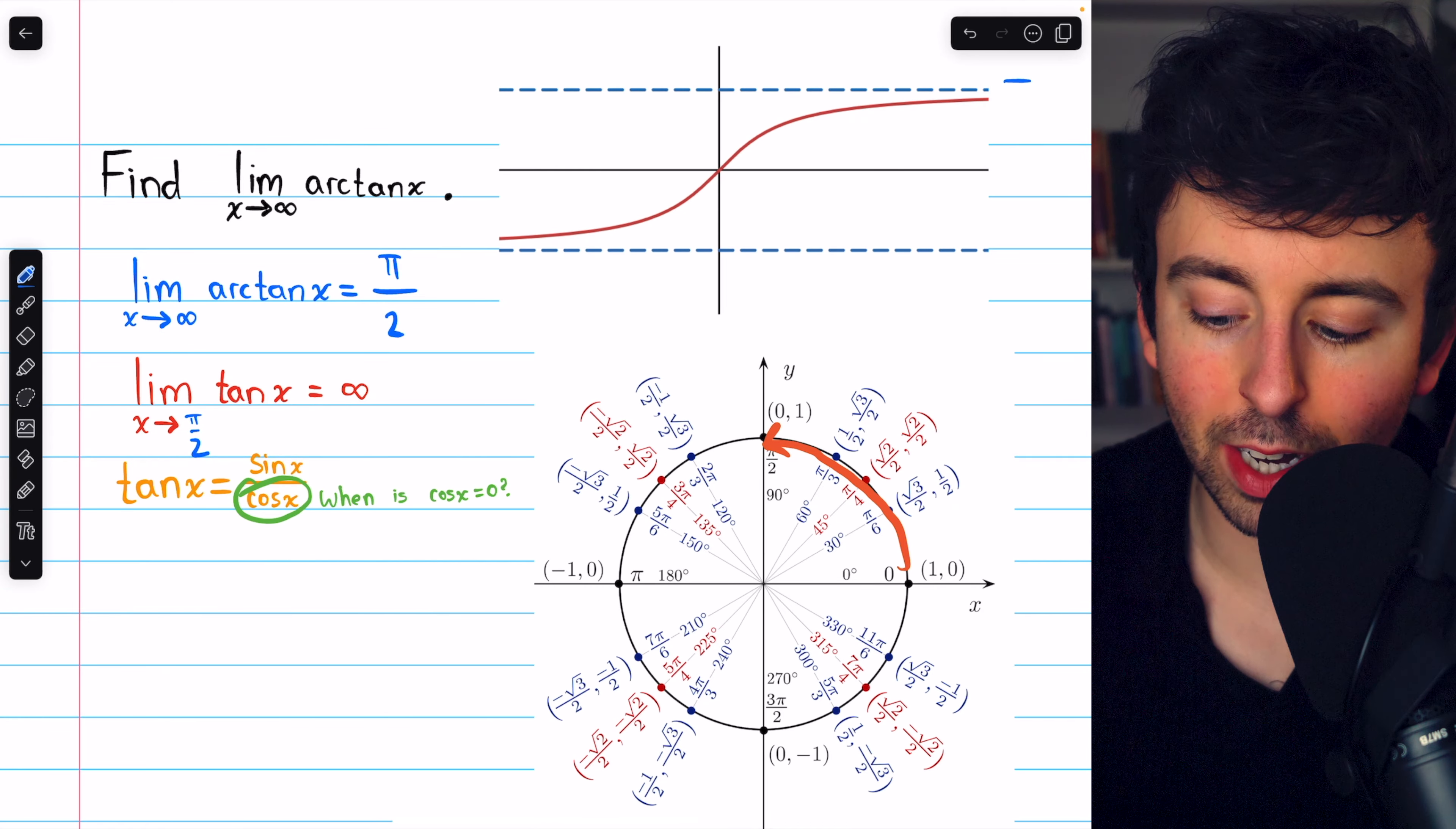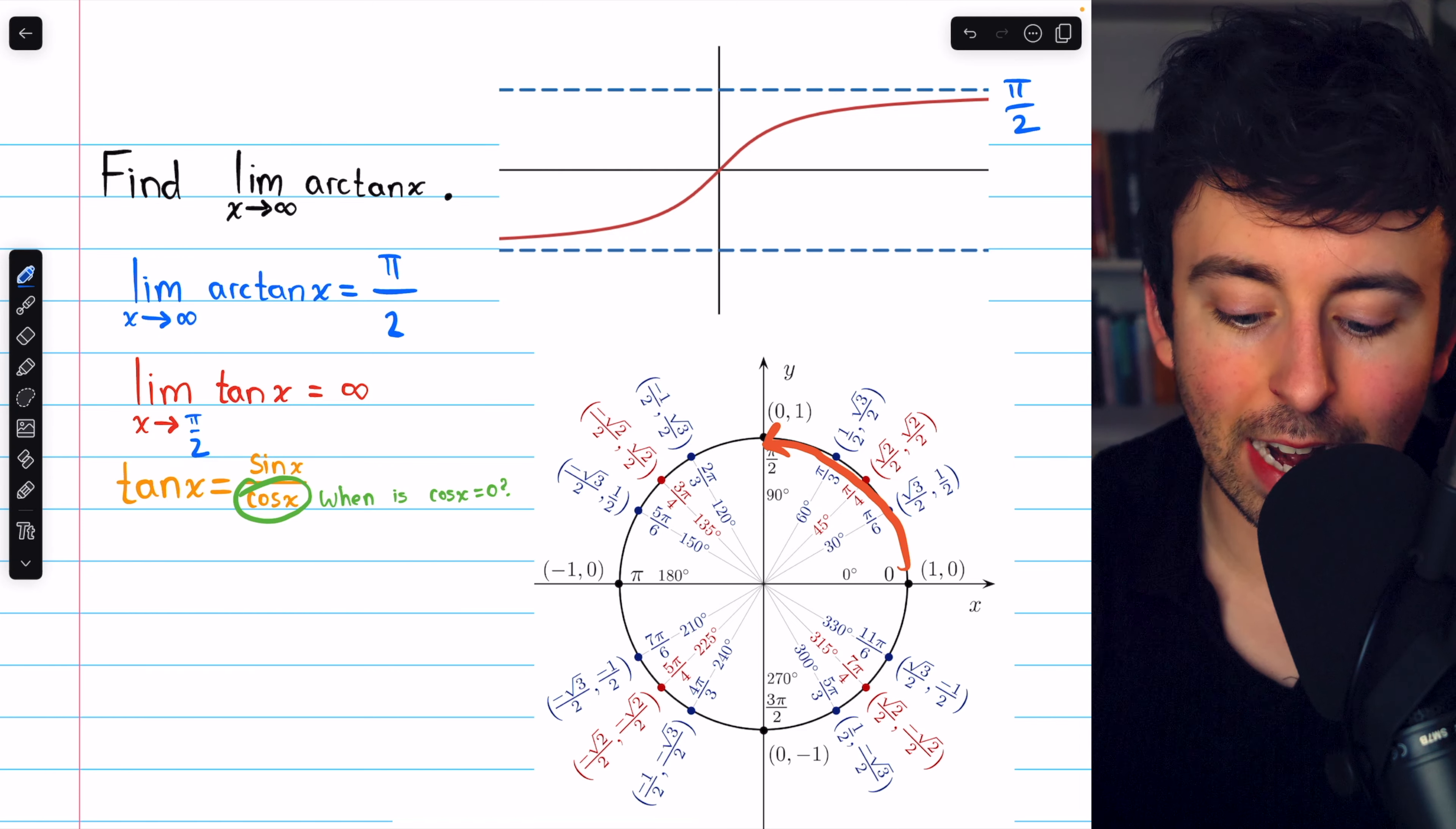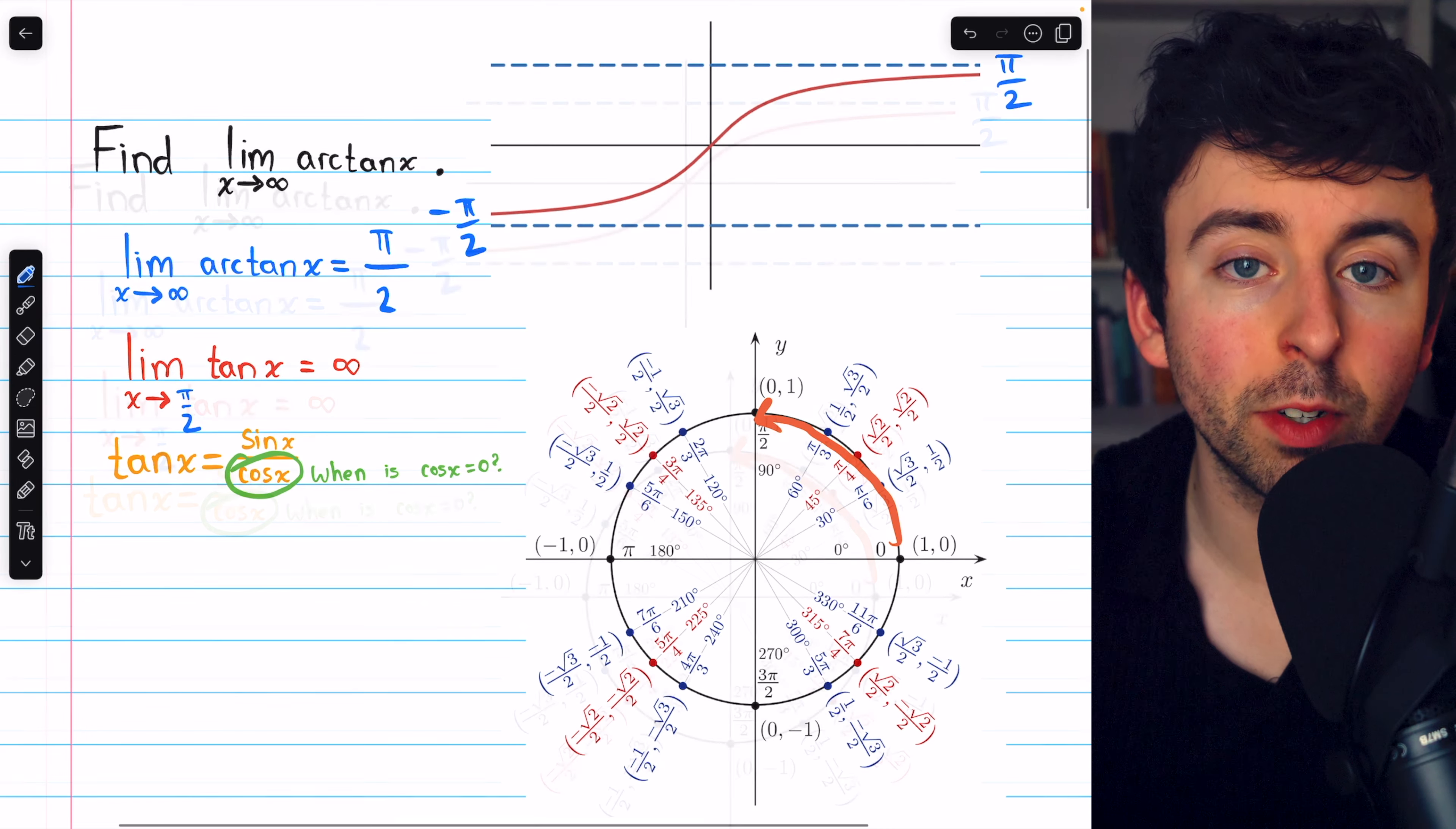As x goes to infinity, arctan x is approaching pi over two. And you might notice as x goes to negative infinity, arctan x is going to negative pi over two.